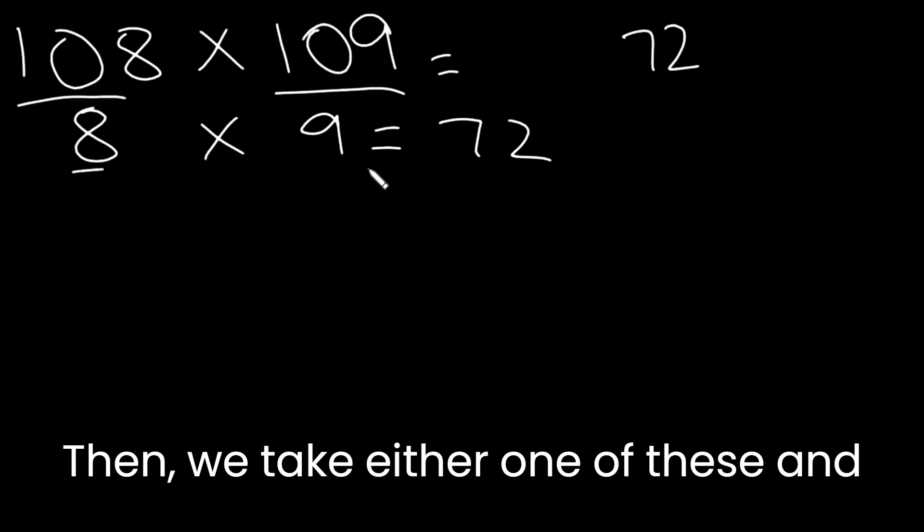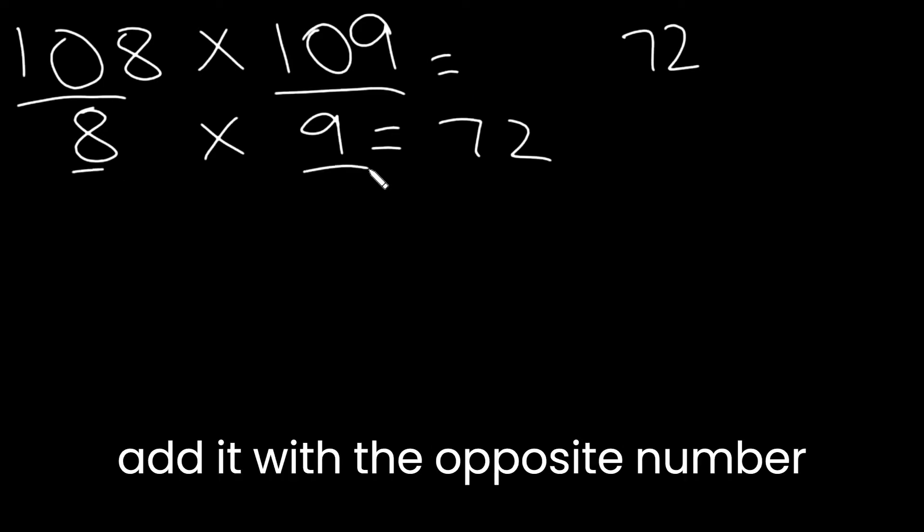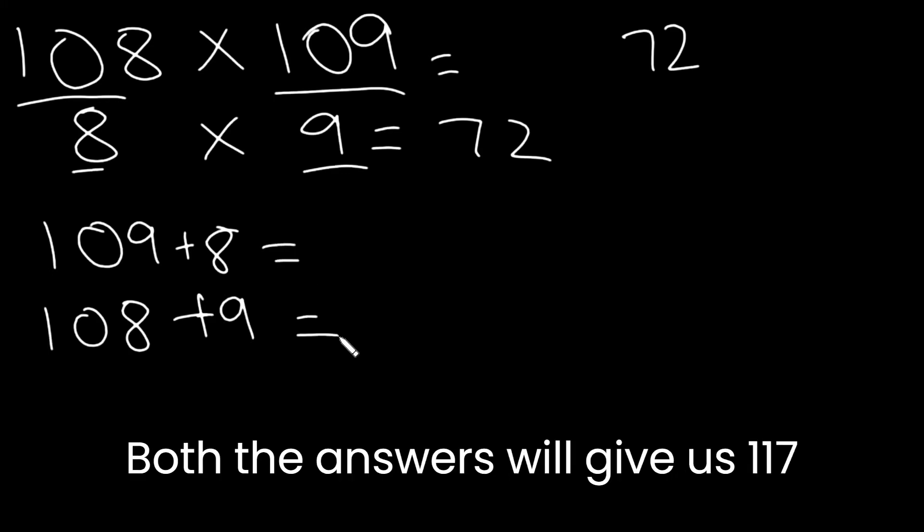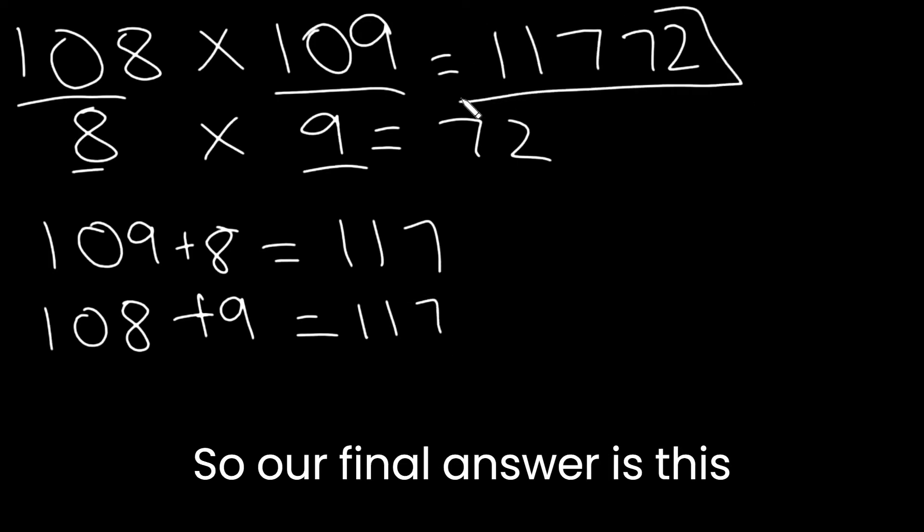Then we take either one of these and add it with the opposite number. So we either do 109 plus 8 or 108 plus 9. Both the answers will be 117. So our final answer is this.